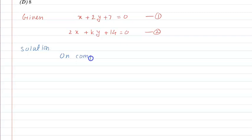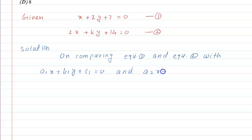On comparing equation 1 and equation 2 with the standard form of linear equations, which are a1x plus b1y plus c1 is equal to 0 and a2x plus b2y plus c2 is equal to 0, respectively.